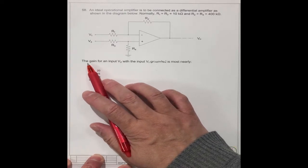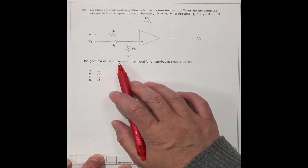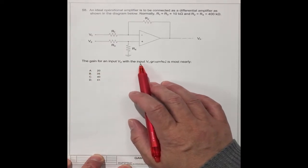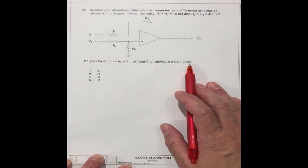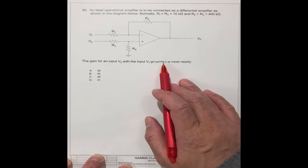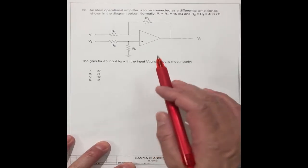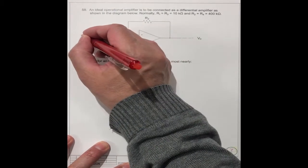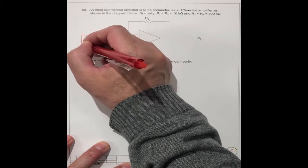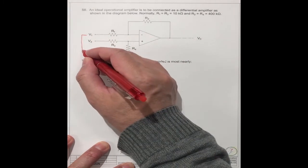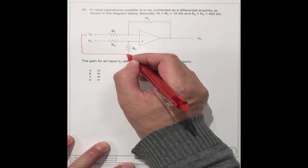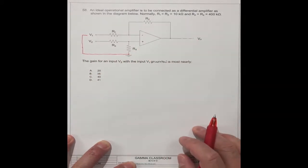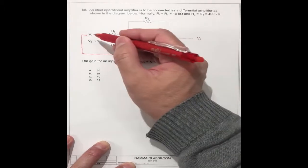This sentence, the gain for input V2 with the input V1 grounded is most nearly - V1 grounded means the input is V0. We can draw like this. See, this means it's grounded. V1 grounded.